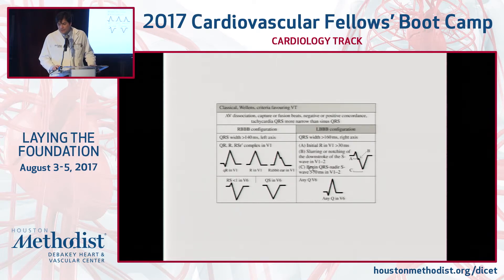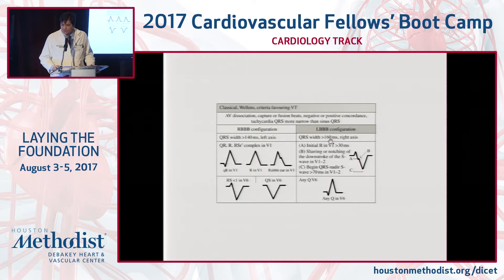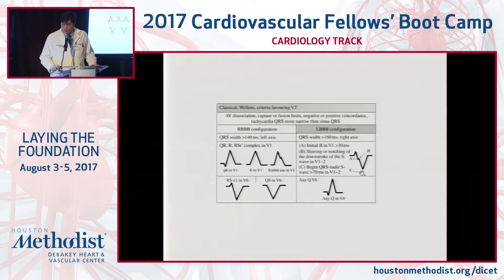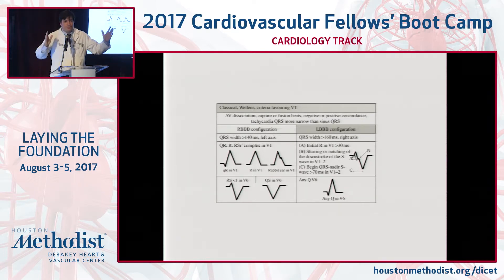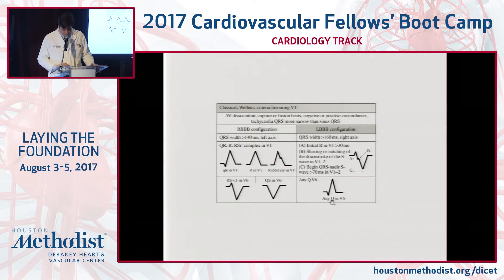In V6, if you have a small R and a deep S, or a QS pattern, that's also suggestive of VT. For left bundle morphology, you allow a little bit longer QRS to be considered ventricular tachycardia, and again right axis deviation. If the first R wave is more than 30 milliseconds, that's very suspicious for VT, as is the presence of a notch. If the interval from the peak of the R to the bottom of the S is greater than 70 milliseconds, also suggestive. If the combined RS interval is above 100 milliseconds, that's VT. Any presence of a Q wave in V6 is suggestive of ventricular tachycardia.